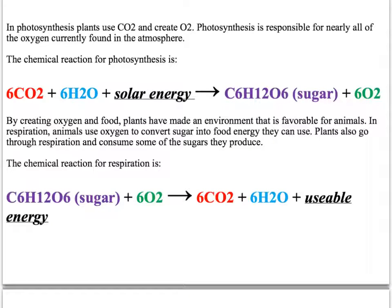Alright, so we mentioned that oxygen is the second most abundant gas in the atmosphere, so let's talk about how it got there. So, the chemical reaction that you need to know is photosynthesis.